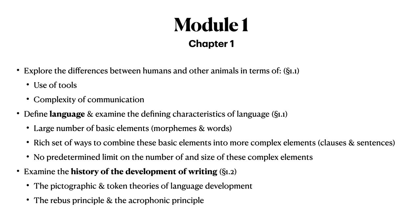In Chapter 1, we explored the differences between humans and other animals in terms of use of tools and complexity of communication systems. We defined language and examined the defining characteristics of language. Specifically, language has a large number of basic elements — morphemes and words — and a rich set of ways to combine these basic elements into more complex elements.